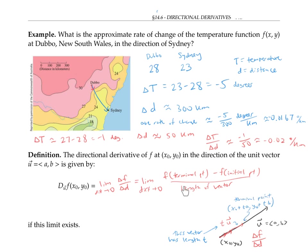Therefore, we can rewrite this limit as the limit as t goes to zero — since t is that change in distance, that length of the vector — of f(x₀ + ta, y₀ + tb) minus f of the initial point (x₀, y₀), divided by the length of the vector t.